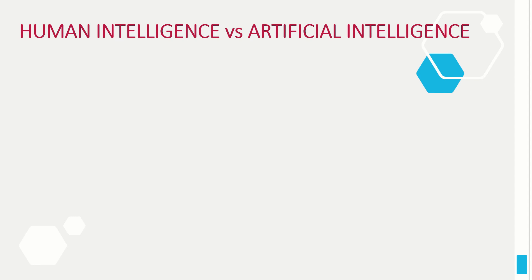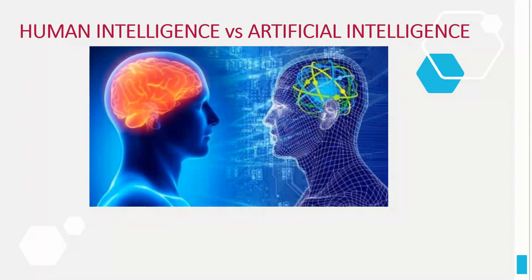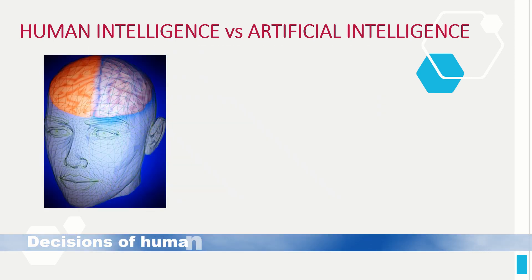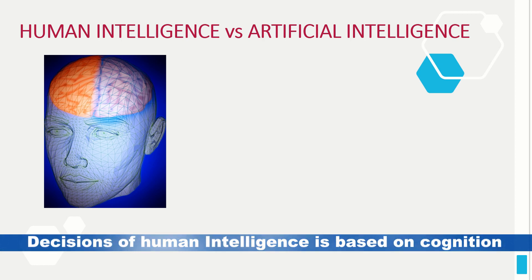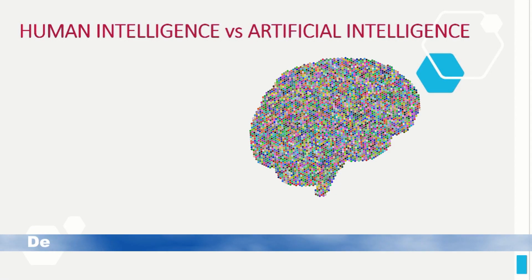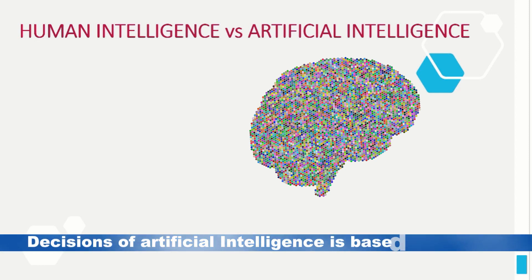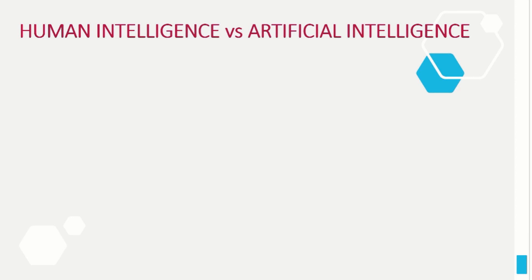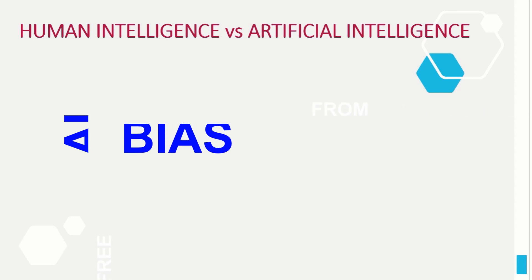Now let's have a quick comparison of human intelligence with artificial intelligence. Human intelligence is based on cognition and experience from daily lives. AI, as its name states, is artificial in nature. The decisions it makes are based on models — data is fed into the machines for decision making. But the decisions of AI are free from bias; it does not incline toward a specific person or preference.